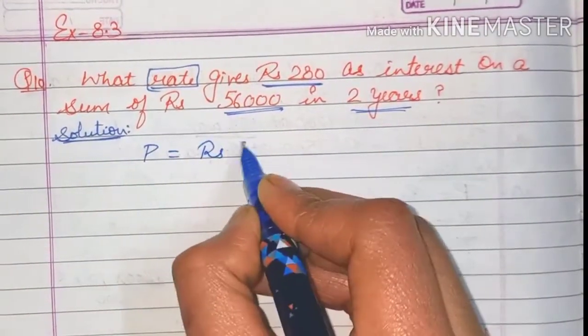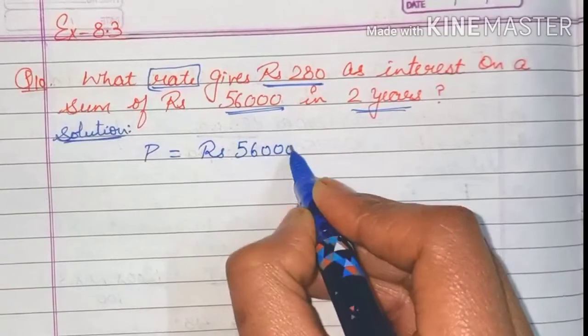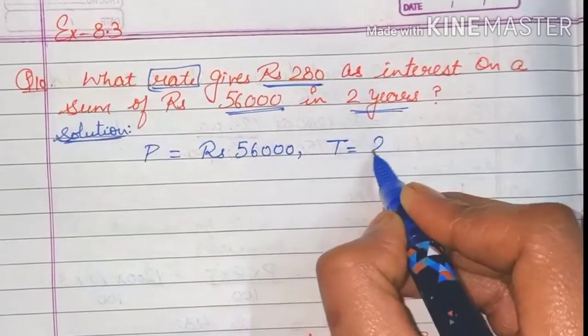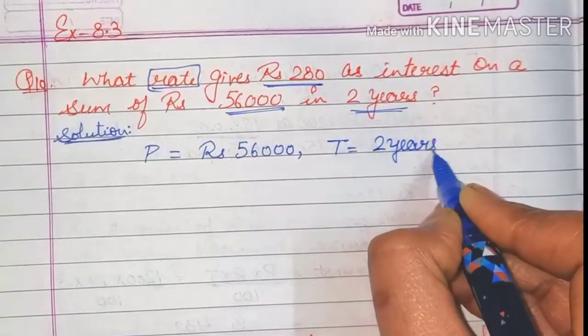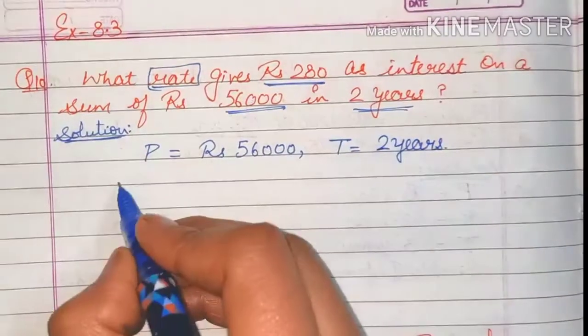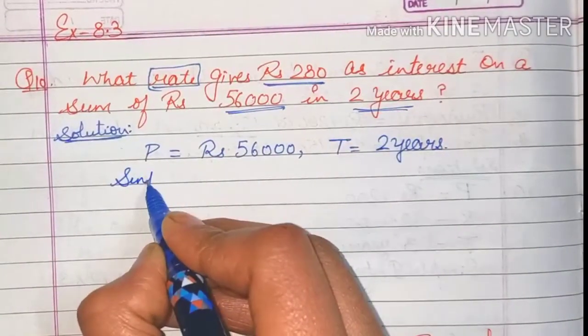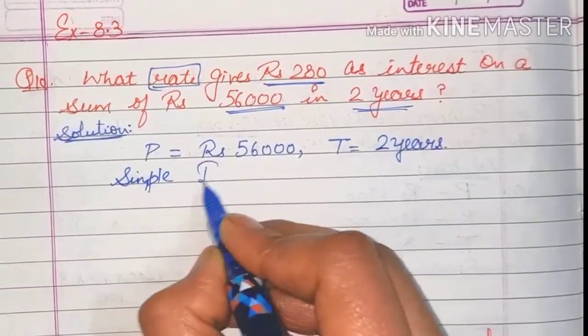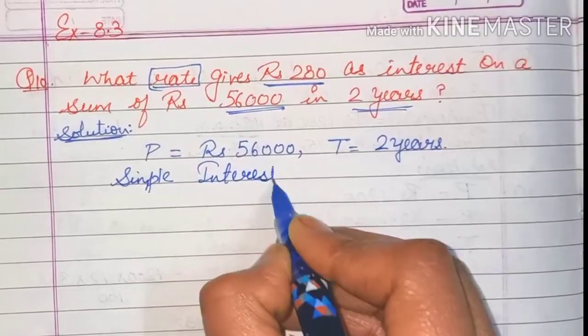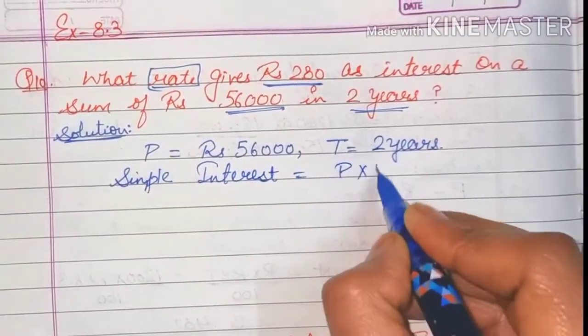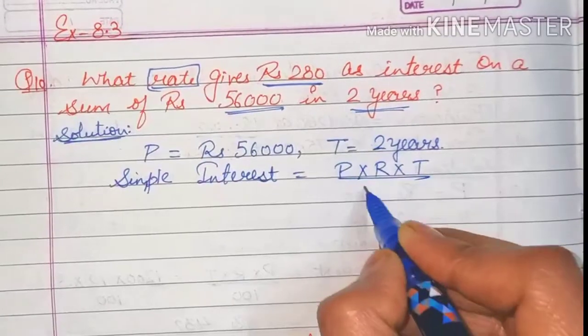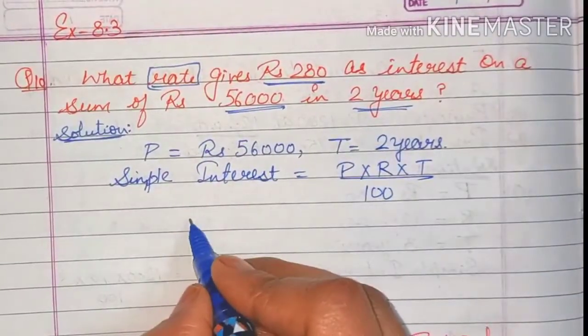So here we are given principal rupees 56,000, time two years, and also we are given simple interest. So here we will use the formula: simple interest is equal to principal into rate into time upon hundred.